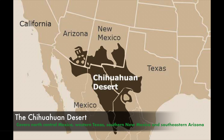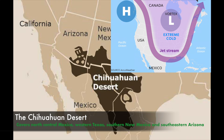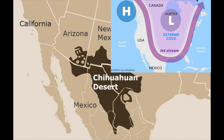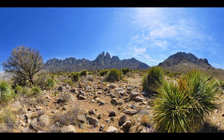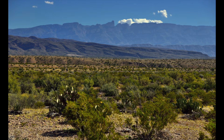Though the Chihuahuan Desert is the southernmost North American desert, it lies at a fairly high elevation and is not protected from Arctic air masses by any barrier, so hard winter freezes are common. Its vegetation consists of many species of low shrubs.